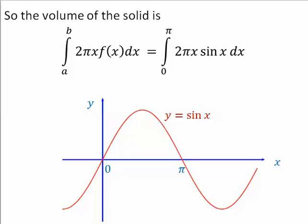For our particular region, we're going from 0 to π. The radius is still x, but the function f is equal to sin(x). So instead of f(x), we put in sin(x).